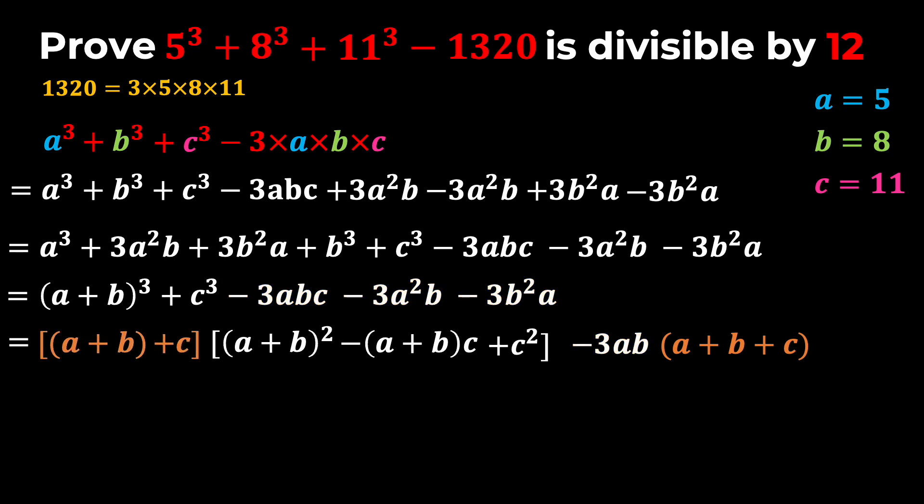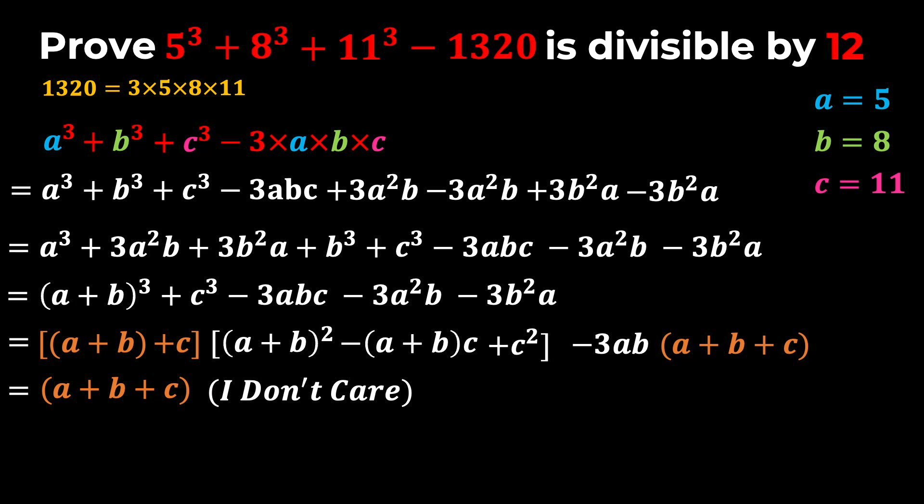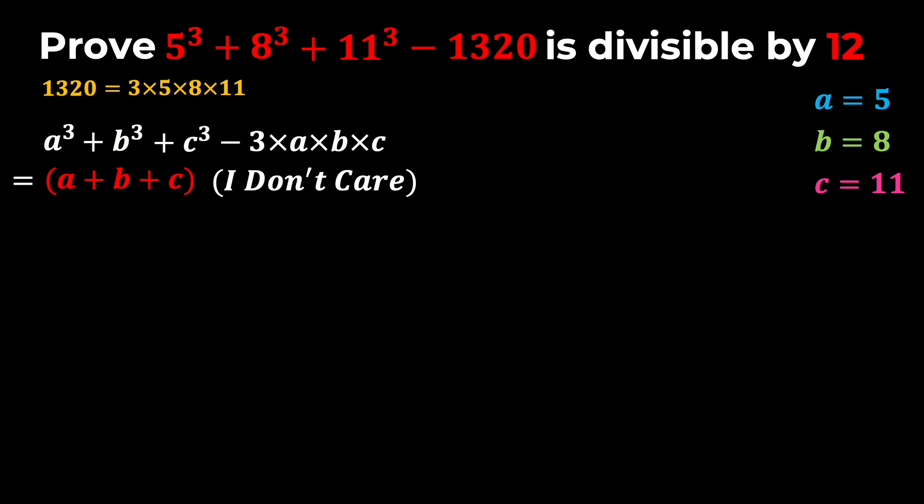So if I factor A plus B plus C, I will have our expression equals A plus B plus C times some other expression that I don't care about. Now the reason why I don't care about this expression is because I did all of this to show that our expression is divisible by A plus B plus C. So I showed that A cubed plus B cubed plus C cubed minus 3ABC is divisible by A plus B plus C.